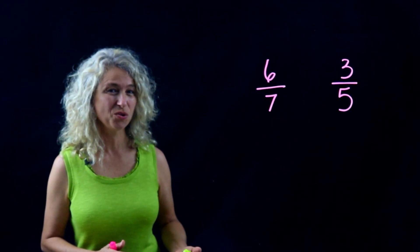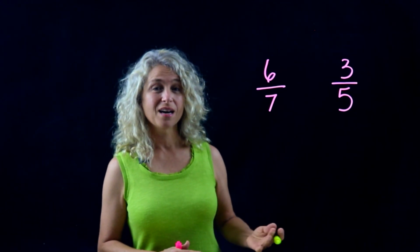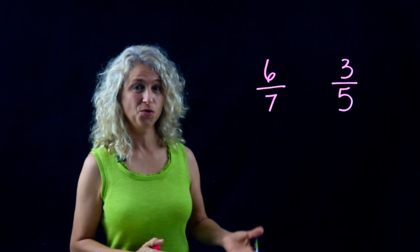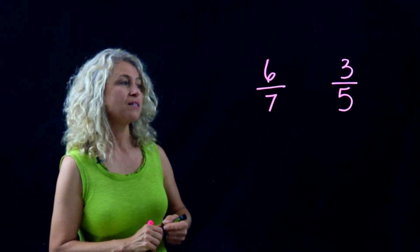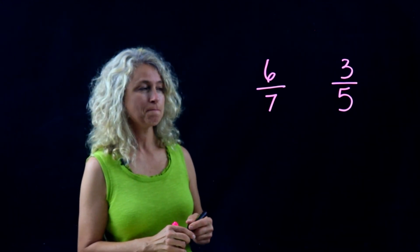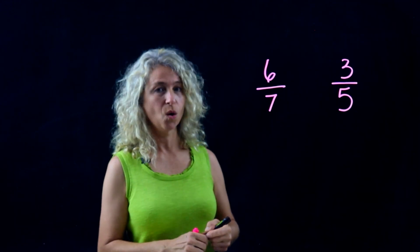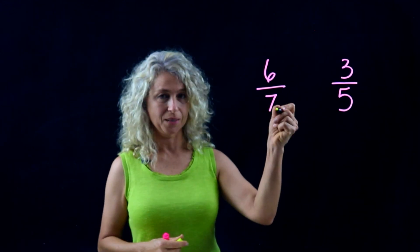I want to show you a quick way to compare two fractions using the cross multiplication method. Some call it the butterfly method. The key to this is always start at the bottom and multiply diagonally.